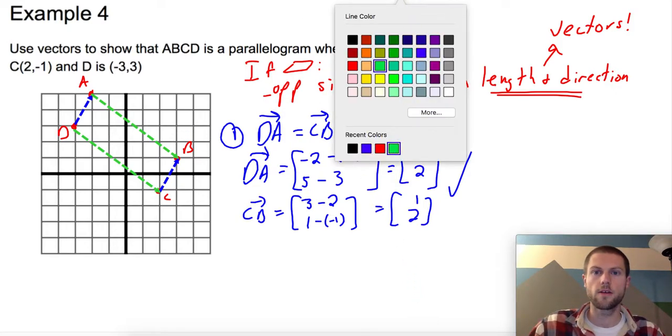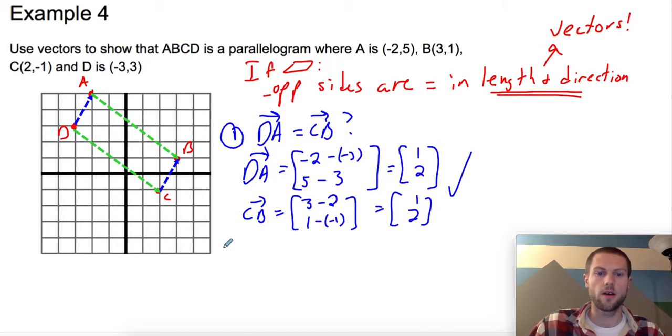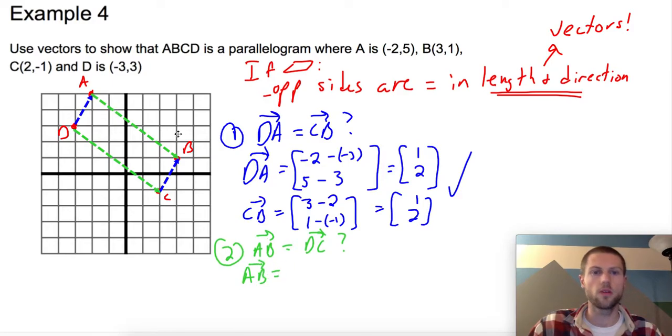Alright, let's take a look at the next pair. Is vector AB equal to vector DC? If it is, we got ourselves a parallelogram. So let's check. Vector AB is going to equal, this time I'm going to actually just count. 1, 2, 3, 4, 5. Let's see, 5, and then 1, 2, 3, 4. 5, -4 are the components of vector AB.